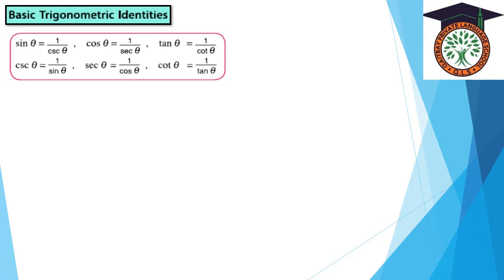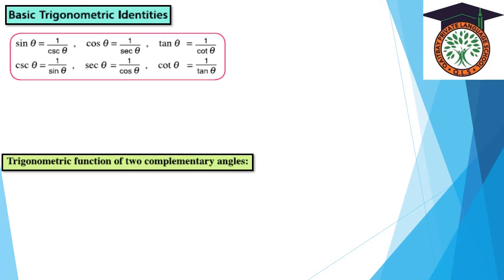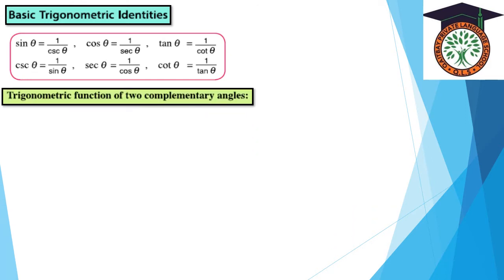Reciprocal identities: sin θ = 1/csc θ; cos θ = 1/sec θ; tan θ = 1/cot θ; sec θ = 1/cos θ; cot θ = 1/tan θ.